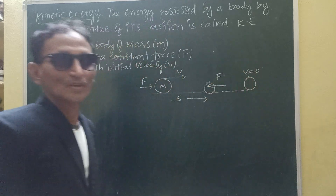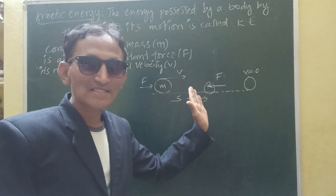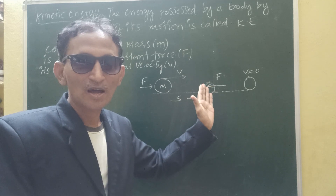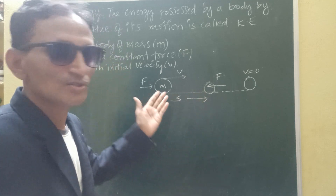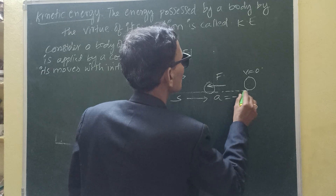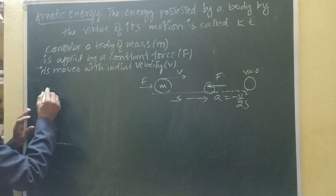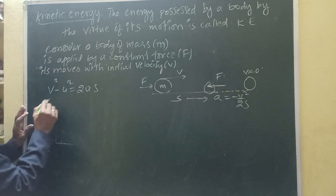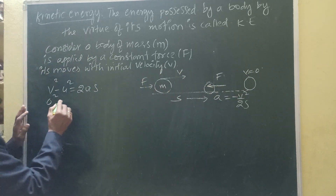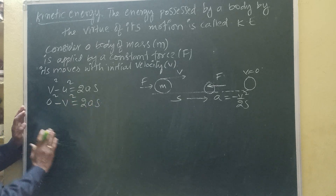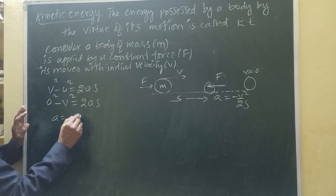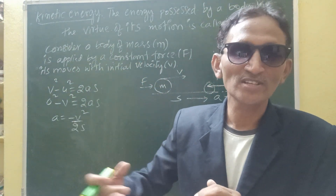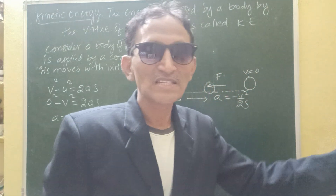The final velocity becomes zero. Because of the applied opposite force, there is a decreasing acceleration called retardation. From the equation of motion: v² − u² = 2as. Here the final velocity is zero, so 0 − V² = 2as, giving acceleration a = −V²/2s. This is the acceleration of the body — because of the opposite force acting on it, the body starts retarding and its velocity decreases slowly until it comes to rest.